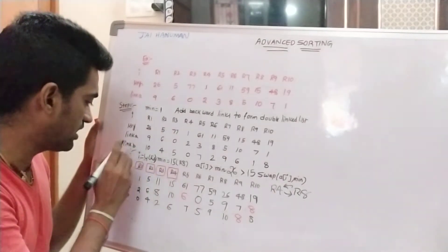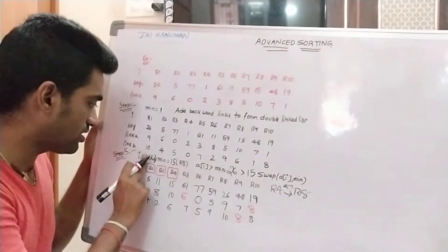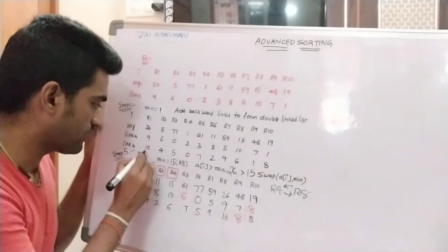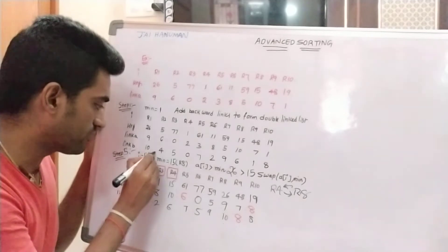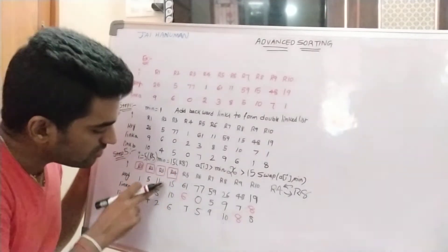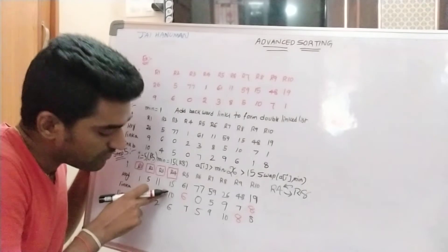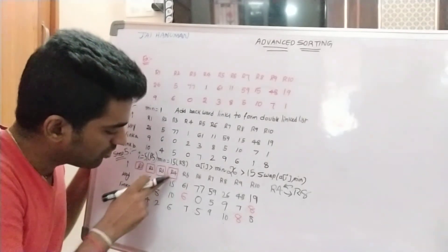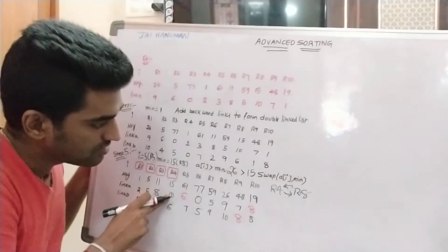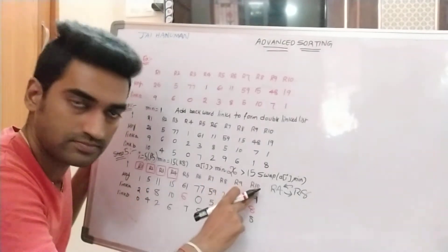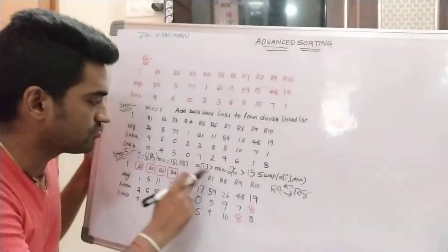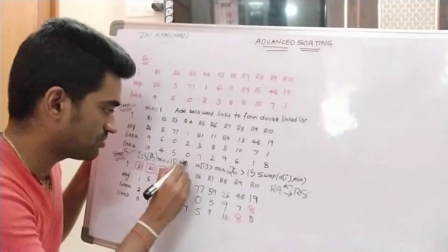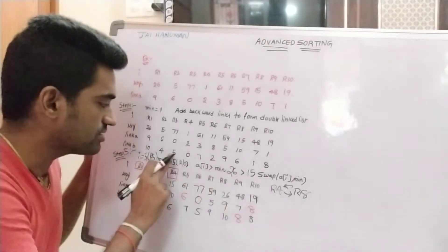I is incremented by one in Step 5. I value is now five, that is R5. We can find out the minimum value. Minimum value is found with the help of the previously sorted record, that is R4. R4 link A is 10, so go to R10. Minimum element is R10 with value 90.